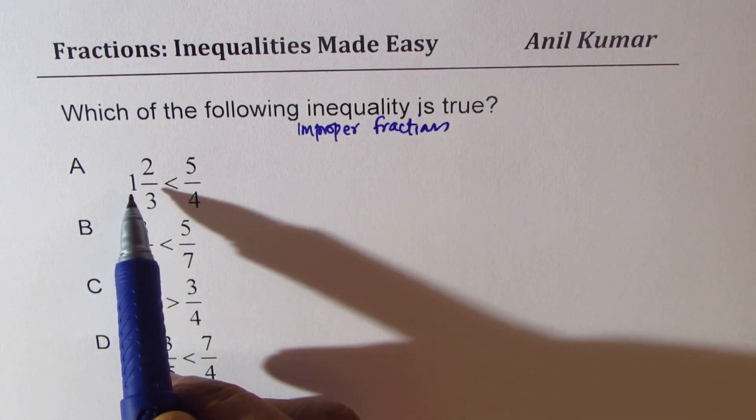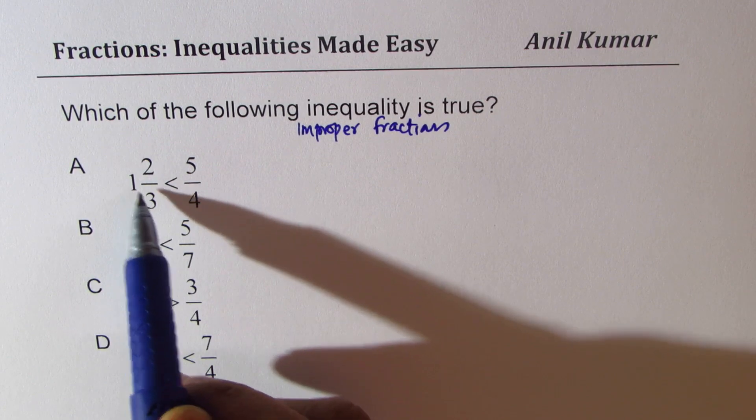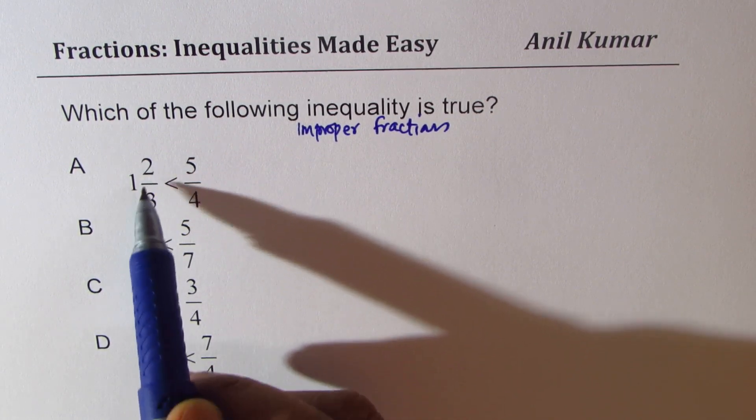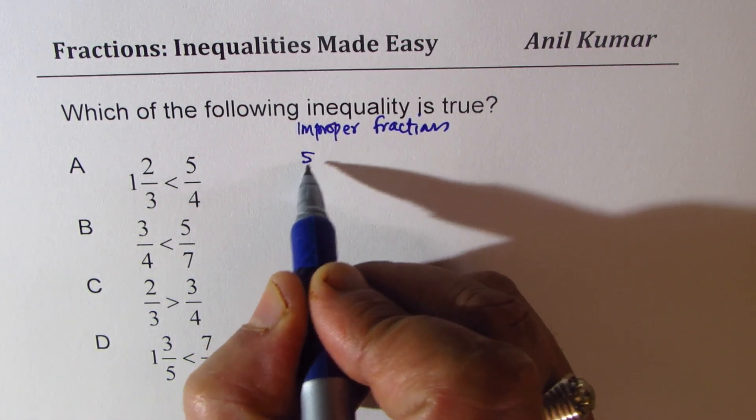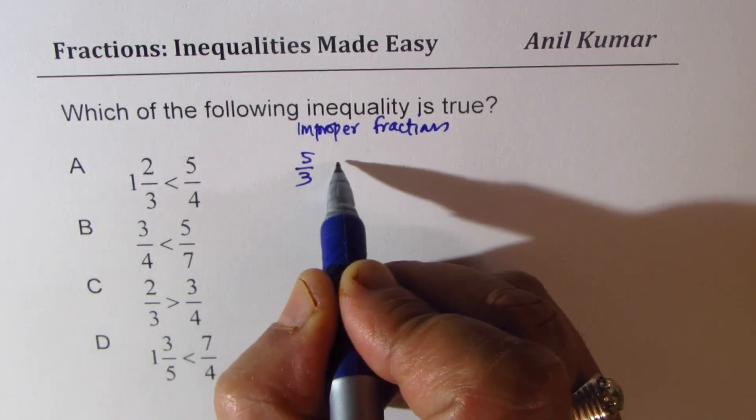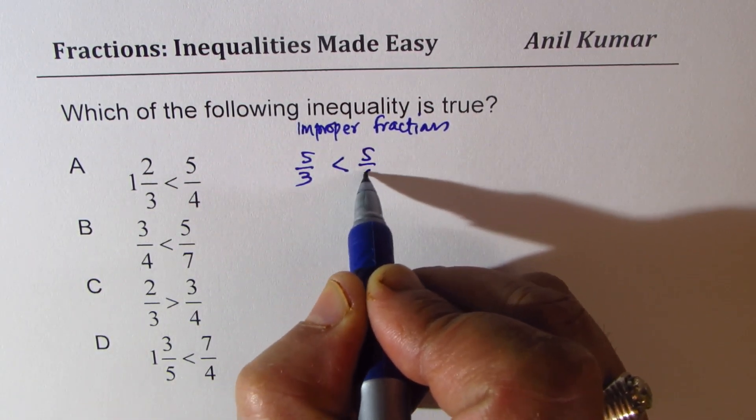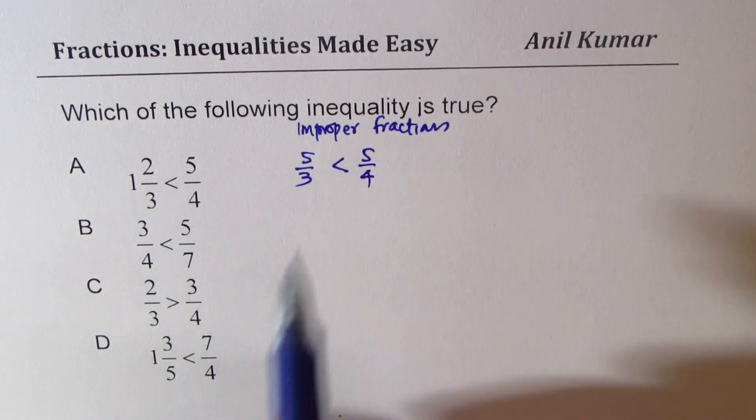So the first one here is 1 times 3 plus 2, which is 3 plus 2 is 5. So we have 5 over 3 and we are given less than 5 over 4. So this is the very first one.